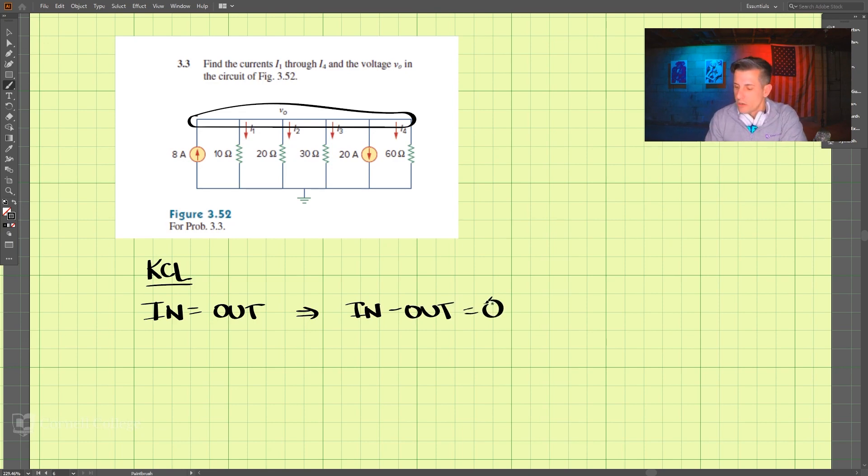So let's go ahead and do that. So in, we have 8, and then out, we have I1 minus I2 minus I3 minus 20, and minus I4 equals 0.